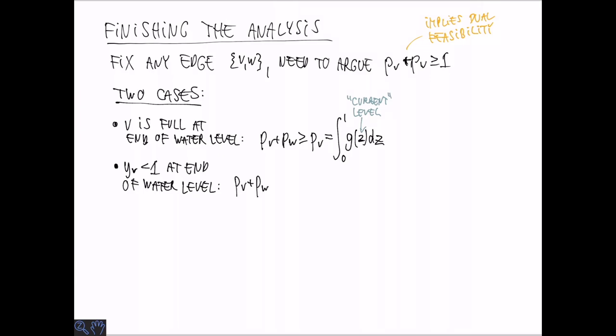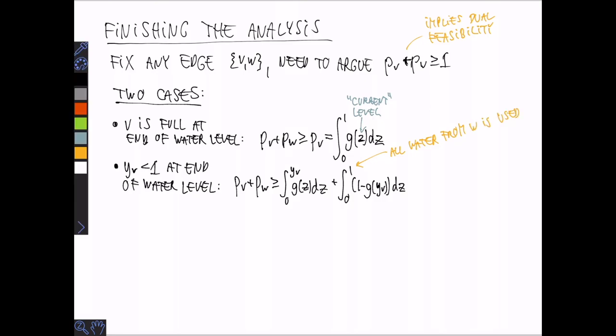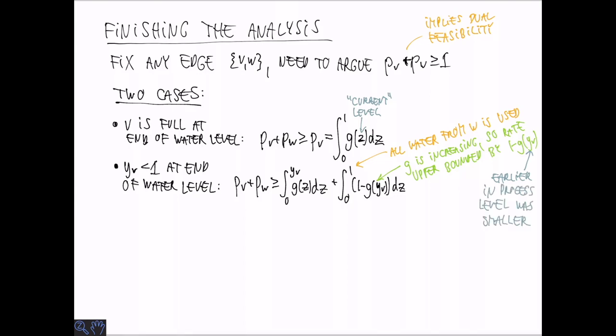In the case where the vertex V is not full, so that is YV is strictly less than 1, at the end of the water level algorithm we give a slightly more complicated bound. So first of all we integrate up to YV, so that's the contribution to PV or that gives us the exact value of PV and then we have to lower bound the value of PW. We don't know exactly how much has been added to PW but we do know that whatever was added is more than whatever would have been added if the neighbors had level YV and this is because G is increasing. So the rate is lower bounded by 1 minus G of YV and since YV is less than 1 we know that all water from W was used so we integrate from 0 to 1.